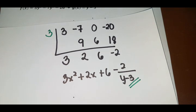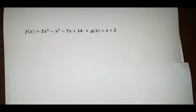So 3y squared plus 2y plus 6 minus 2 over y minus 3. Oh, sorry. Okay. Next.